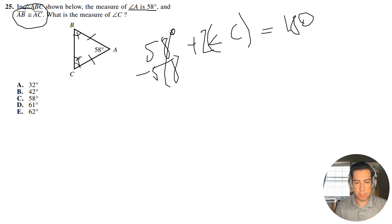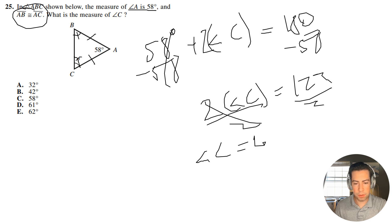So I'll just go ahead and subtract off the 58 degrees, and I'll get two angle C, and that's going to be 122. I'll divide both sides by two, and I am going to get the angle C is equal to 61 degrees.